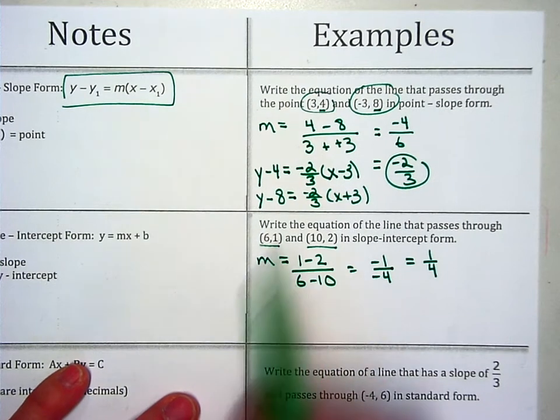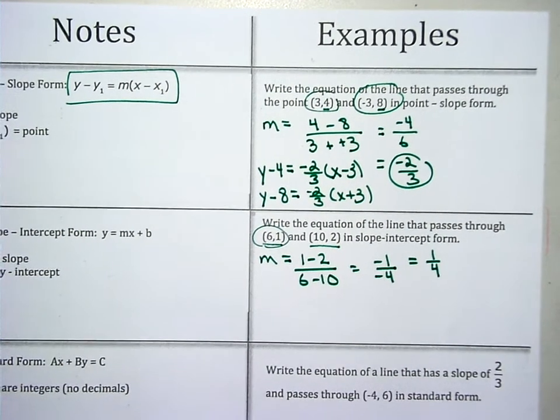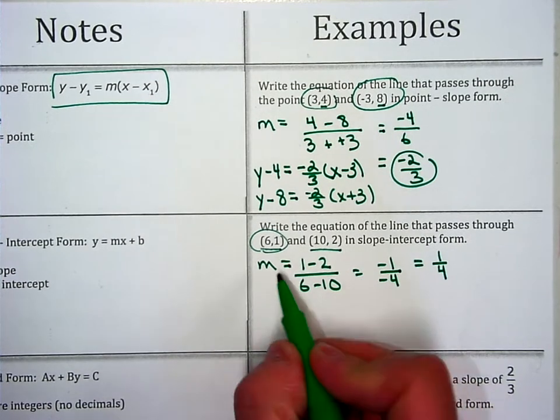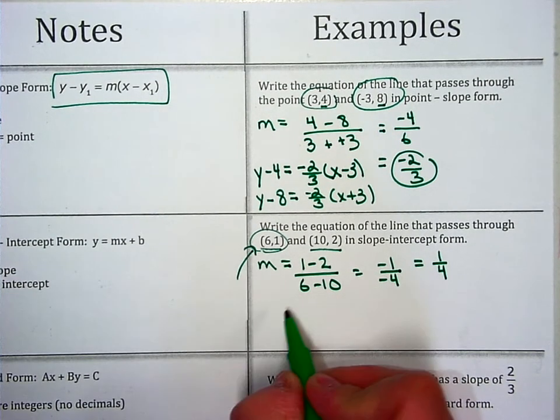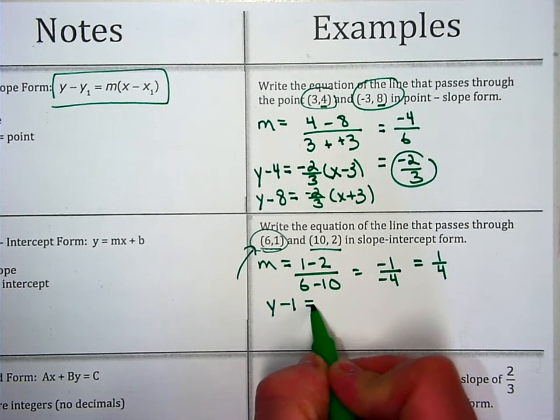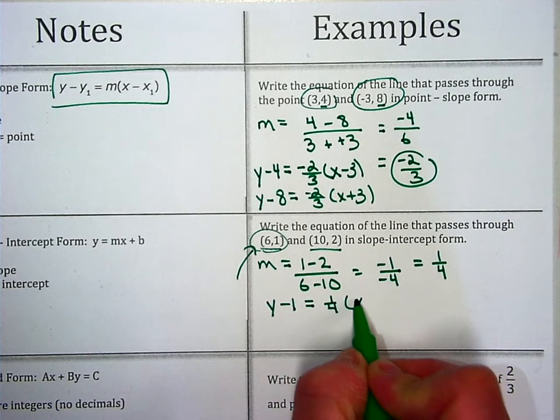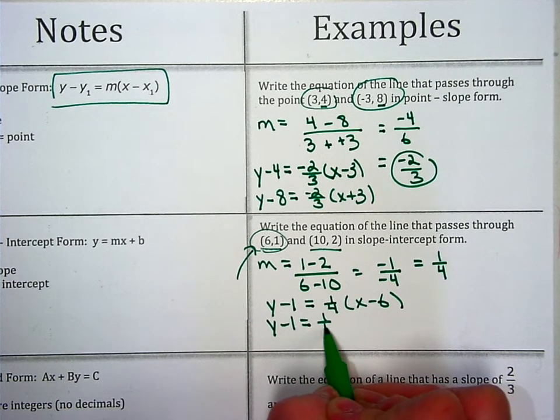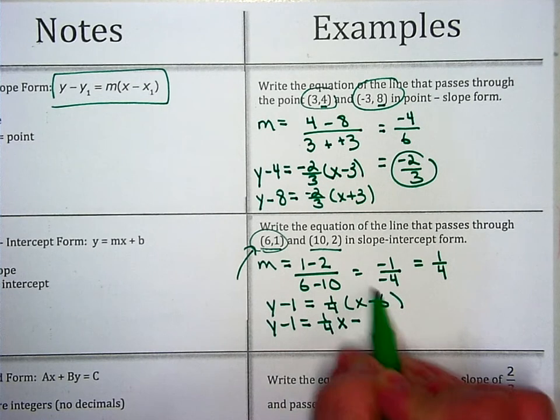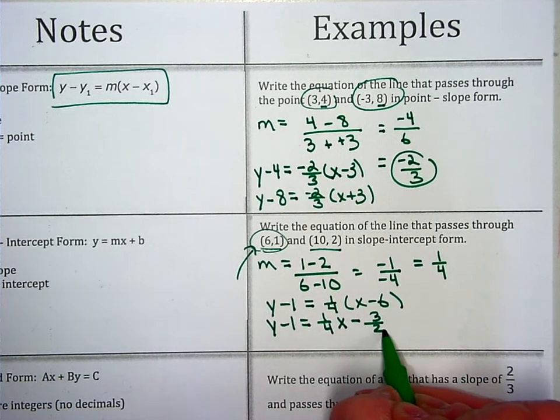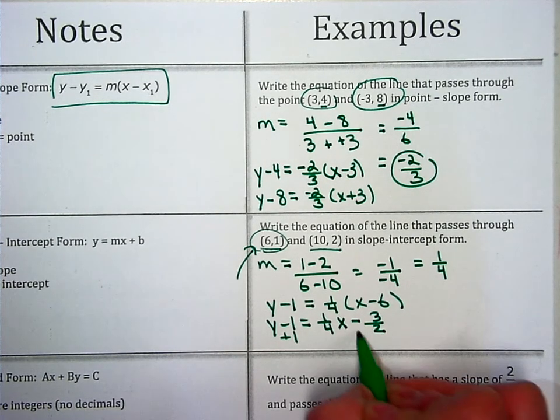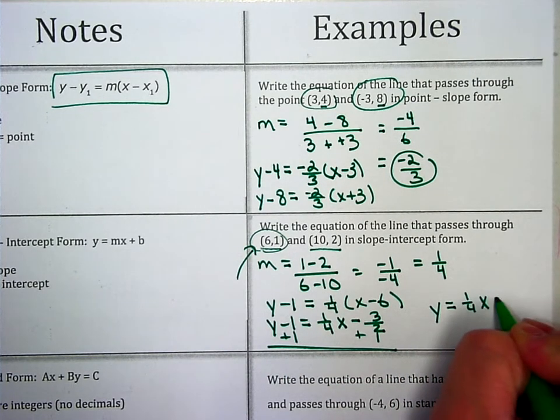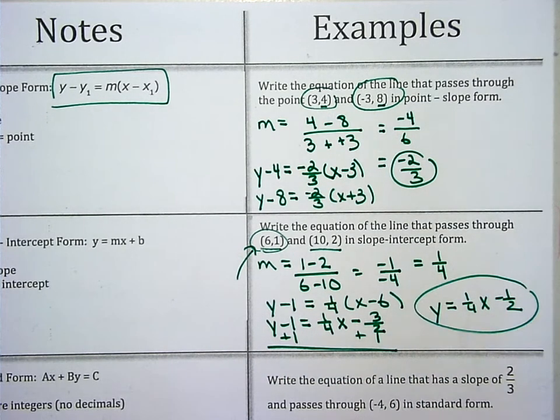Now, what I want to look at is, do I notice if either of these are your y-intercepts? Nope. So I do need to go to point slope form first. I'm going to use this one. y minus 1 equals 1 fourth times (x minus 6). I need to get y by itself, so step 1, distribute: 1 fourth x minus, use your calculator, this is going to be 3 halves. I need to get y by itself, plus 1, plus 1. y equals 1 fourth x minus 1 half is slope-intercept form.